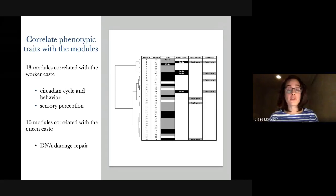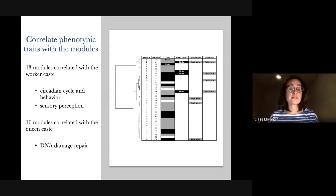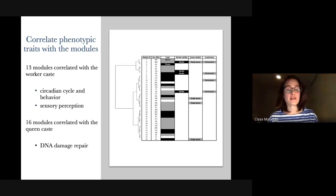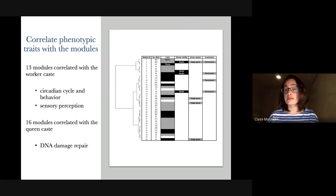Some modules for the worker were linked to sensory perception, circadian cycle, or behavior — the kind of biology you would hope to find when it comes to workers. For the queen, there were some modules linked to DNA damage repair, for example. Also, some of the other phenotypes we looked at, such as worker sterility, were correlated with some of the modules.